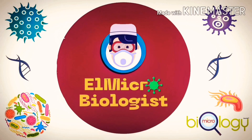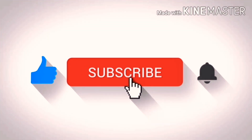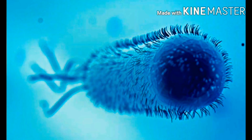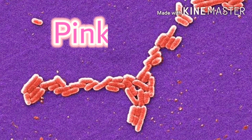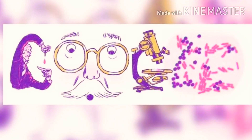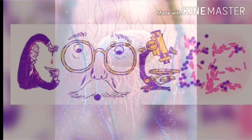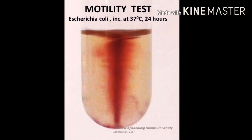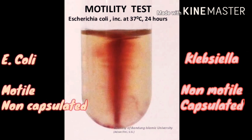Hello everyone and welcome to a new video from the microbiologist. Today we'll be talking about the identification of E. coli. E. coli is a Gram-negative bacilli that appears pink during the Gram stain test. It's non-capsulated and very motile, and these two behaviors differentiate it from Klebsiella species, which almost undergo the same reactions in many biochemical tests.